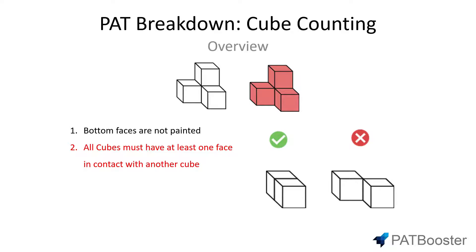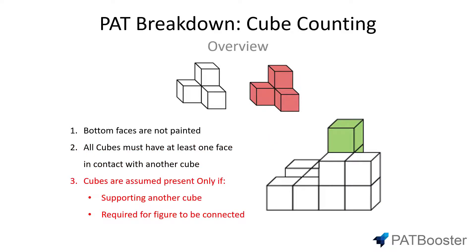This rule just helps with assuming the presence of cubes that you can't see, which is actually our third rule. It states that cubes are assumed present only if they are supporting another cube, or if they need to be there for the cube to be fully connected as we talked about in rule two. For the first point, I've highlighted this column of cubes in green — it's pretty easy to tell that this column is made up of three cubes: the top one, the middle one, and the lower one which we can't see, but we assume it's present as it has to support the cubes above it.